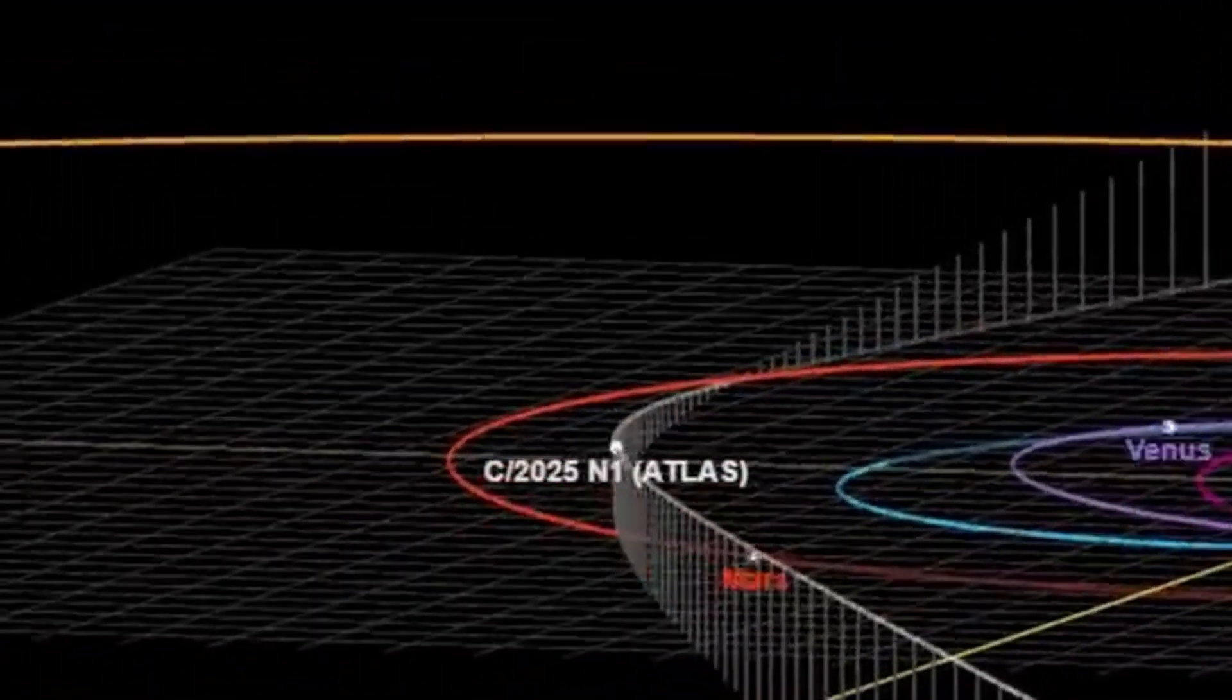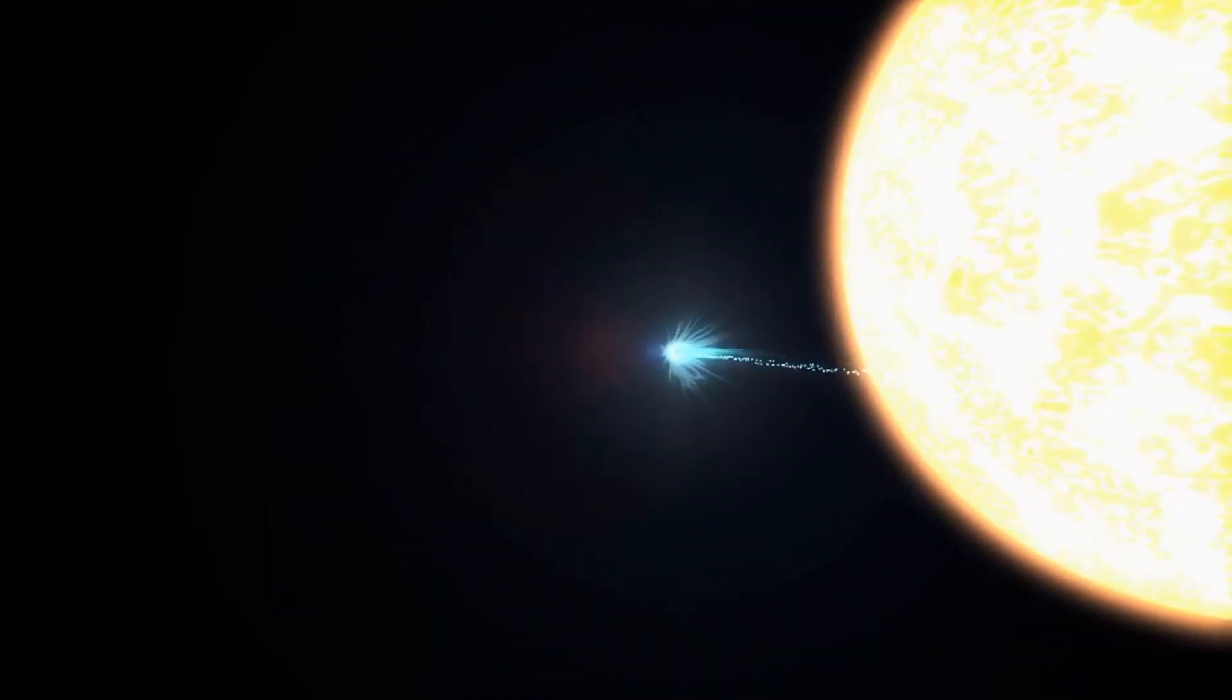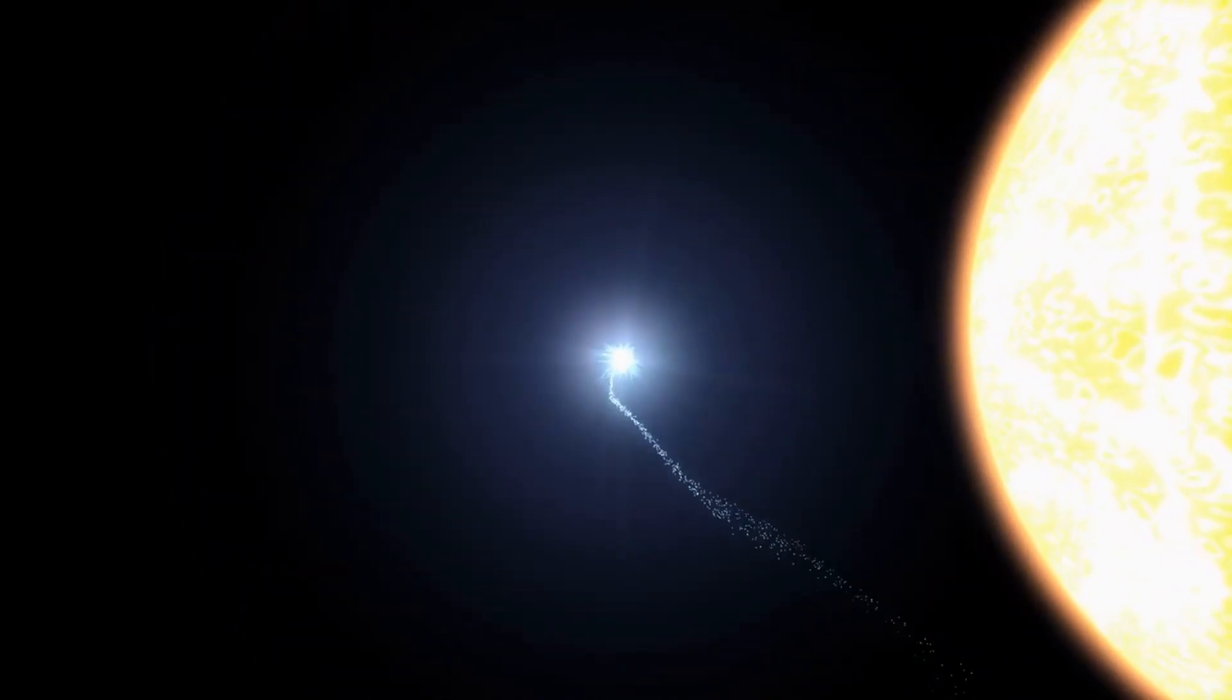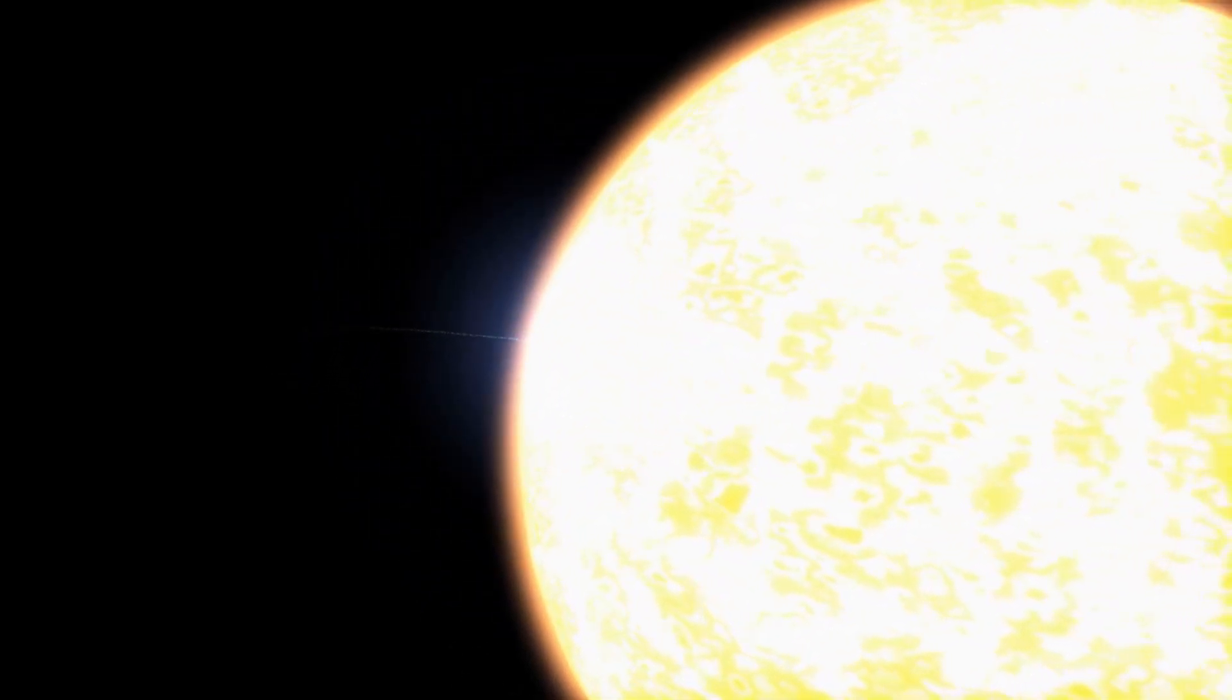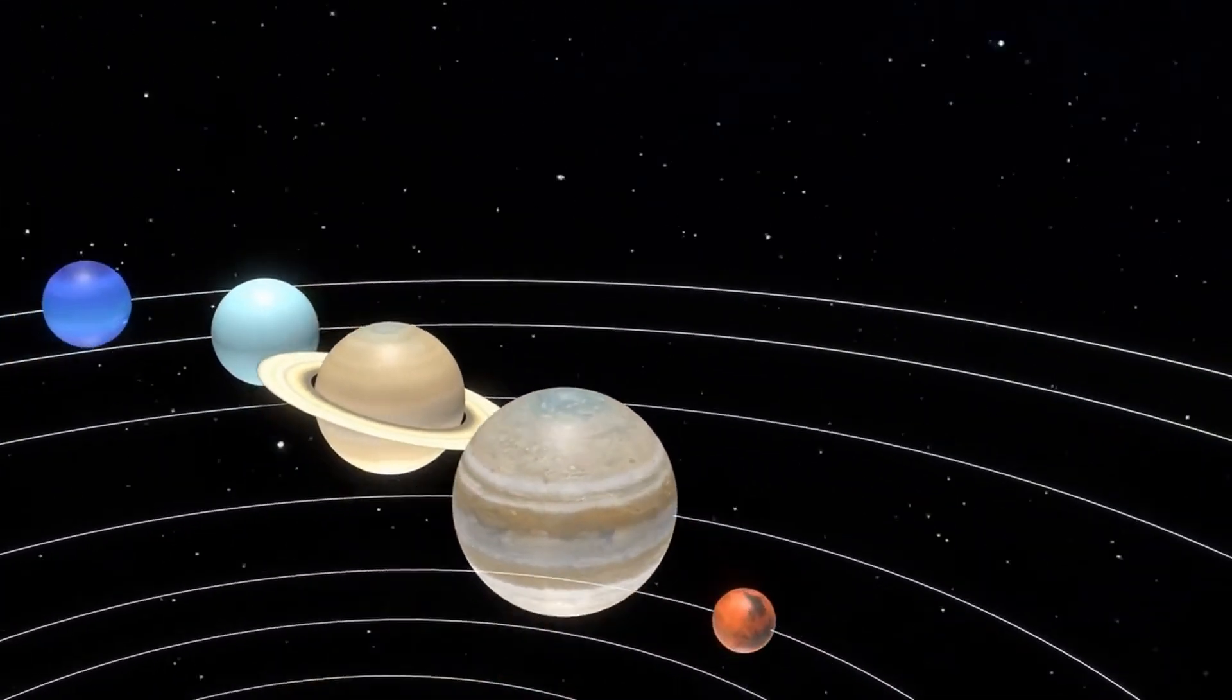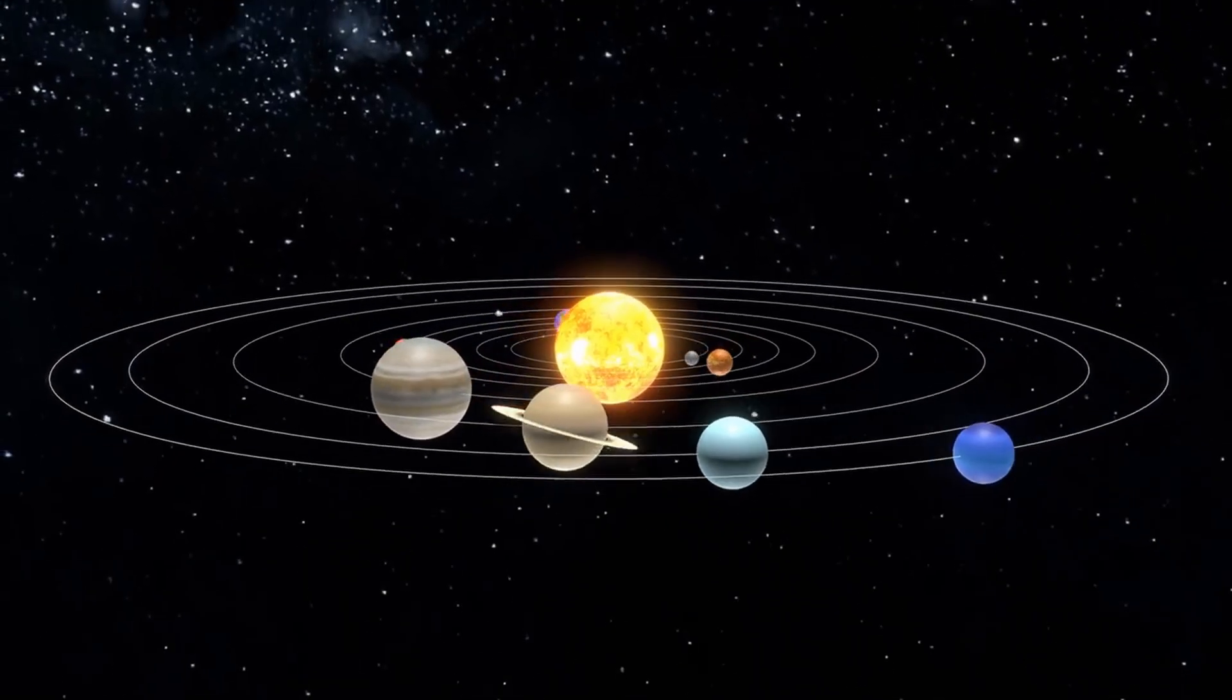Jupiter's hill radius isn't just a theoretical line, it's a calculated value derived from exact physical parameters. The mass of Jupiter, the mass of the Sun, the precise positions and velocities of both objects. For March 16th, 2026, the calculated hill radius for Jupiter is approximately 33.24 million miles. 3i Atlas will pass at 33.21 million miles.